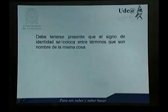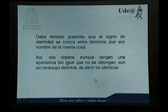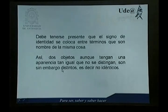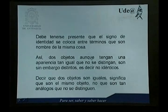Volviendo al presentador, debe tenerse en cuenta que el signo de identidad se coloca entre términos que son nombres de la misma cosa. Así, dos objetos, aunque tengan una apariencia tan igual que no se distingan, son sin embargo distintos, es decir, no son idénticos. Decir que los objetos son iguales significa que son el mismo objeto, no que son tan análogos que no se distingan.